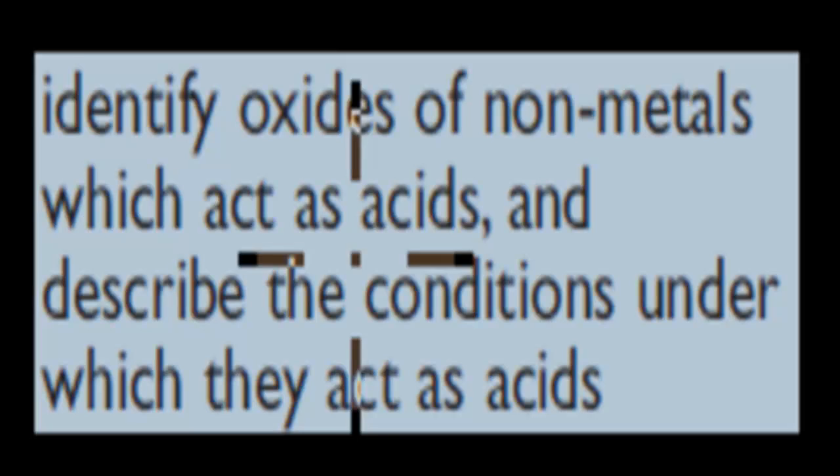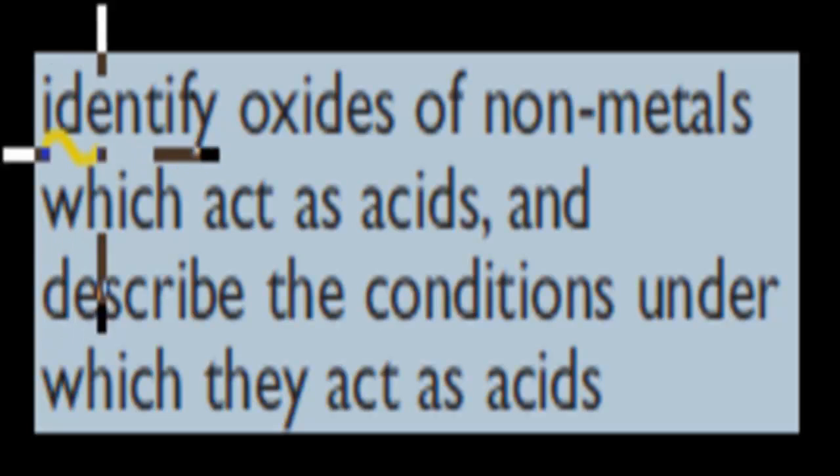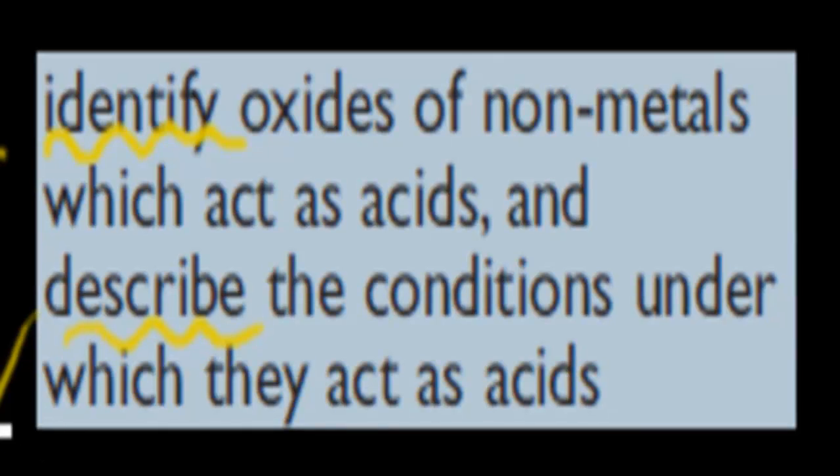Welcome to the first video of the environmental pollution chapter. The aim is to cover the first dot point, which says identify oxides of non-metals which act as acids and describe the conditions under which these act as acids. There's two parts: first we have to identify, and then we have to describe as well.